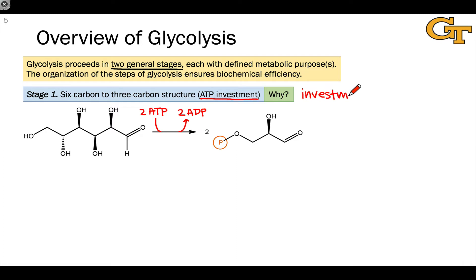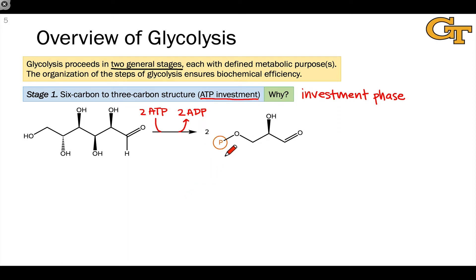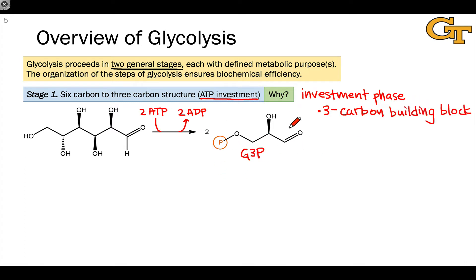This raises the question of why nature invests energy into glycolysis — that's like putting money in the bank when your goal is to take money out. There are a few reasons why we might want to reduce a six-carbon compound to a three-carbon compound. This product is known as glyceraldehyde 3-phosphate, or G3P. One reason is that it provides a three-carbon building block — G3P is not just generated in glycolysis and can be siphoned off to other biochemical pathways. For example, it can be used to construct longer carbon chains with different structures than glucose.